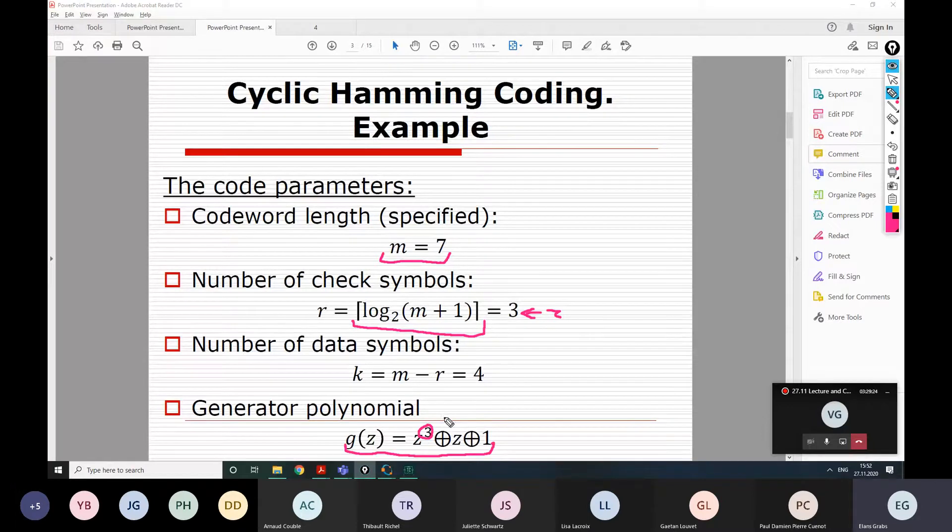That's for you to choose, but basically they are the same values. Then when you have R, you can find K. How many information symbols per your codeword do you have?